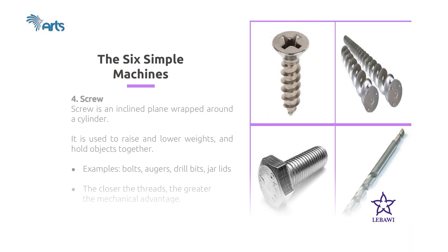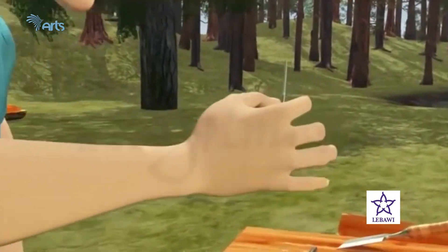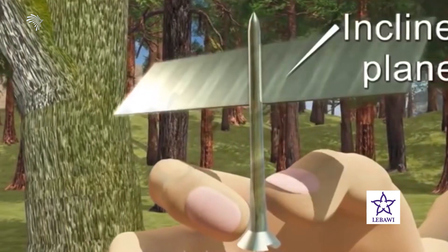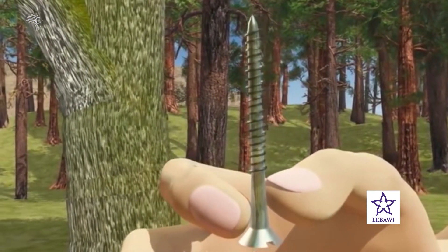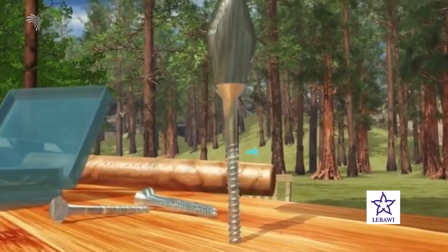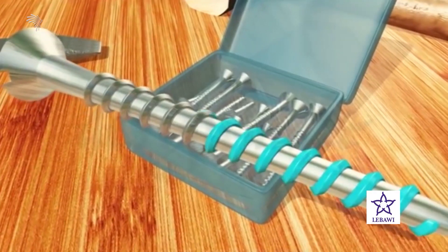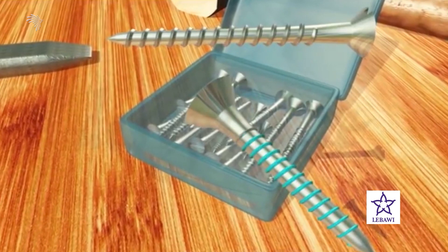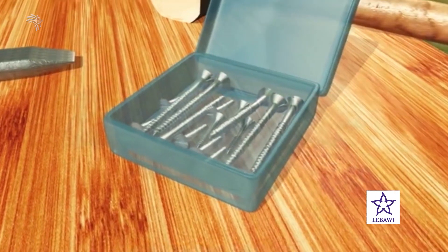The fourth type of simple machine is a screw. A screw is an inclined plane wrapped around a cylinder. It is used to raise, lower, or hold objects together. Bolts, augers, drill bits, and jar lids are examples of screw. The closer the threads, the greater the mechanical advantage. The gap between two consecutive threads is called pitch.